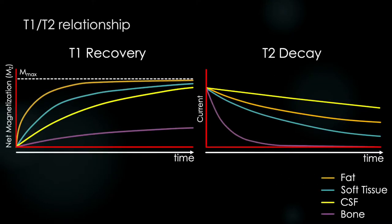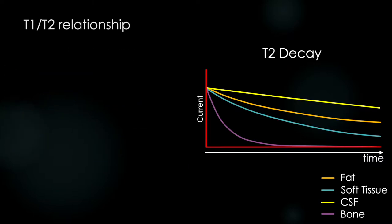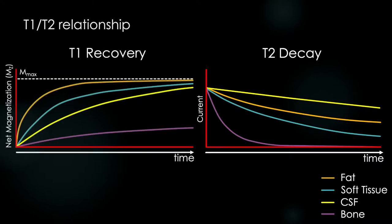After all of that, we have one final piece of the puzzle to solve: how does the T1 recovery time relate to our T2 decay curves? As we've said over and over, our machine can only directly see this process known as T2 decay. But we have T1-weighted images, so we know there has to be a relationship between these two processes. Let's start by closely examining the timelines of these two graphs.